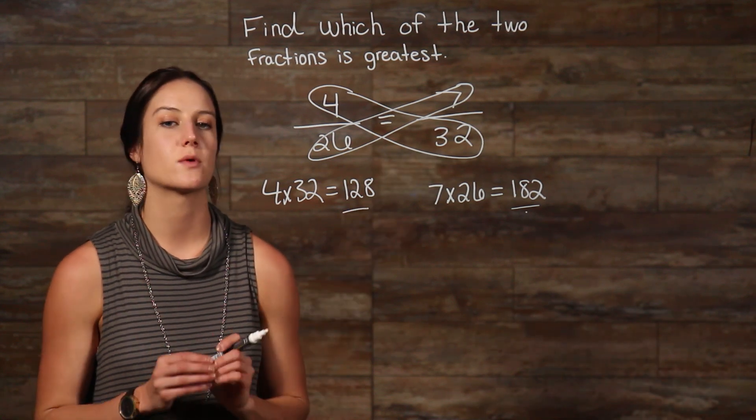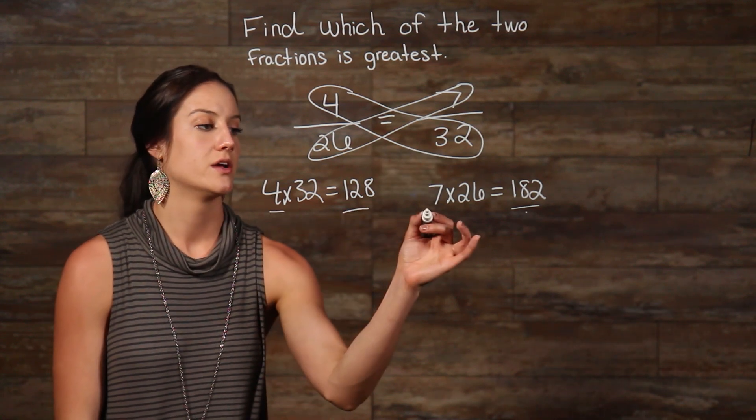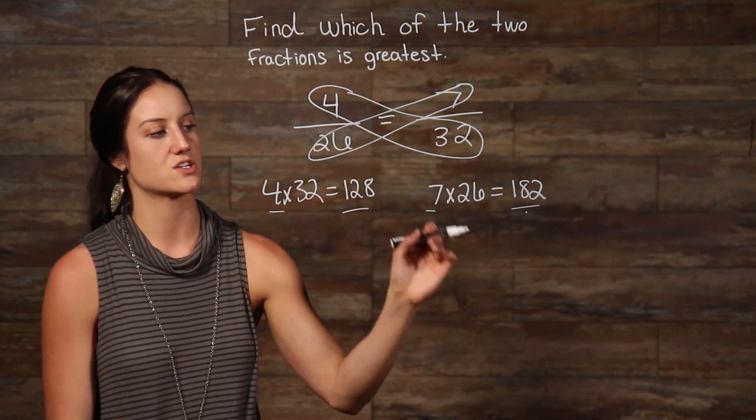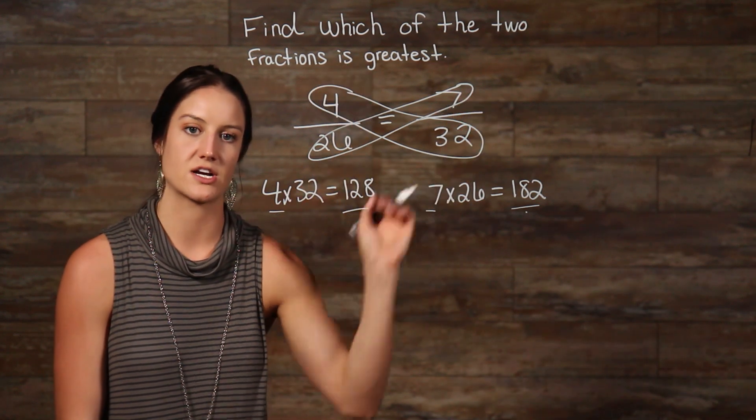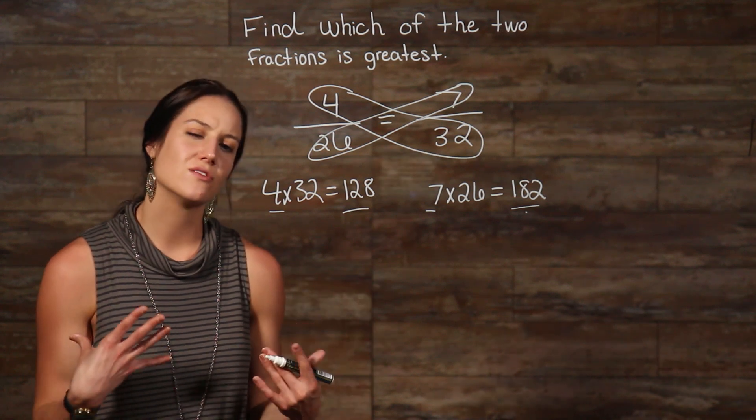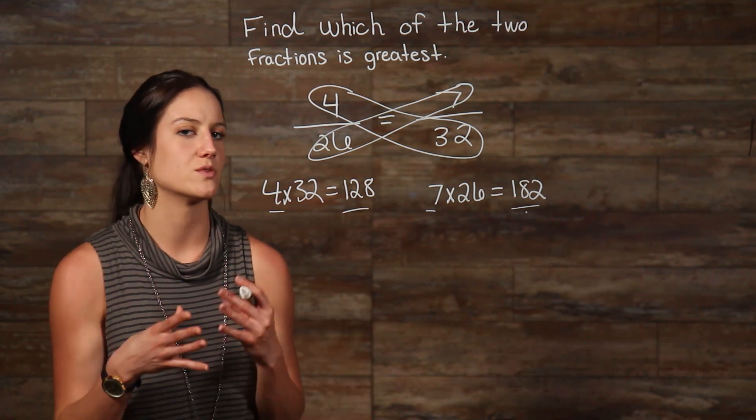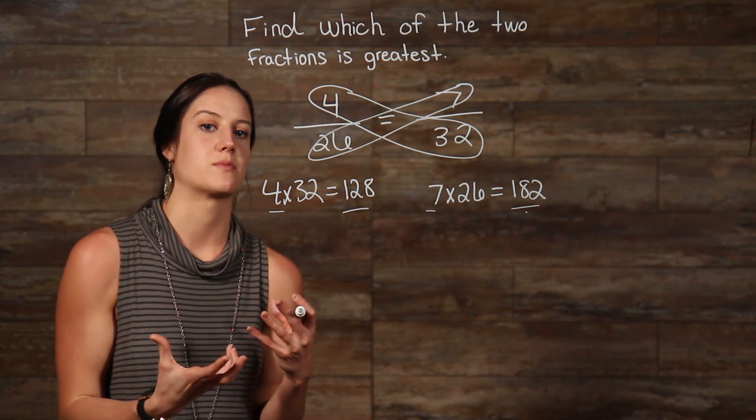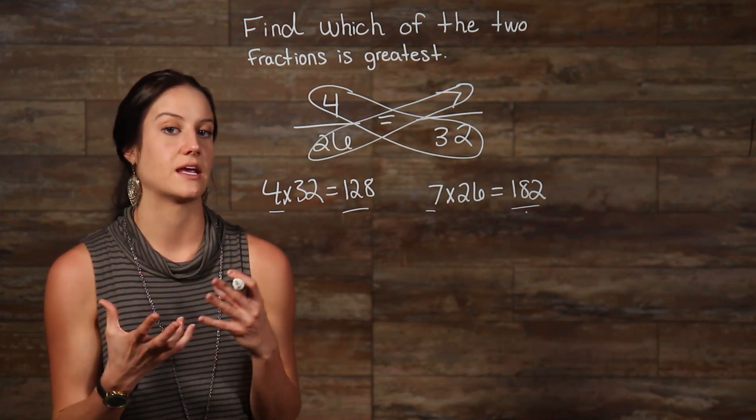We must always remember that the number that we multiplied with our numerator represents that corresponding fraction. So this number is representing this fraction, and this number is representing this fraction. I mention this because it may be a little confusing to see numbers taken from two different fractions being multiplied together, but the product only representing one of the fractions and not the other.